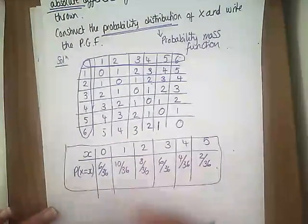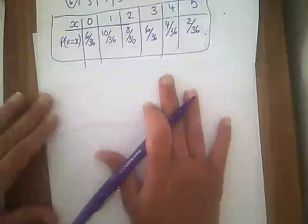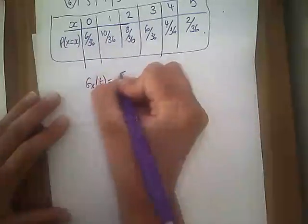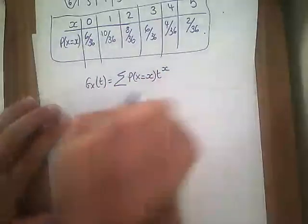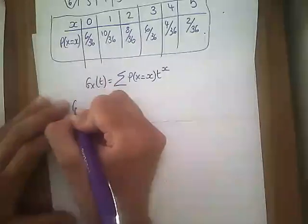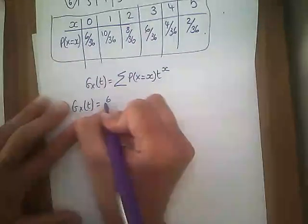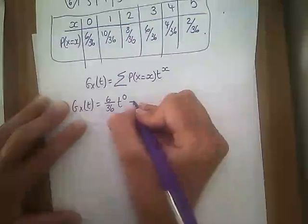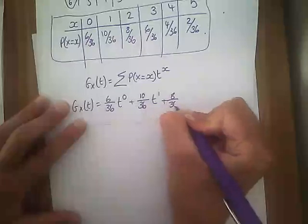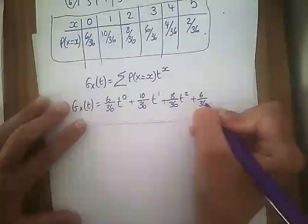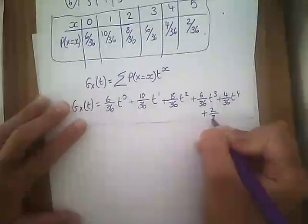Now we've got to do the PGF. A PGF is given by the sum of the probability of X times t to the power of x. Reading straight from our table: 6/36 · t⁰ + 10/36 · t¹ + 8/36 · t² + 6/36 · t³ + 4/36 · t⁴ + 2/36 · t⁵.